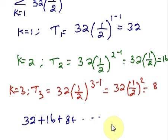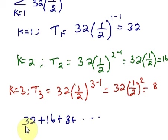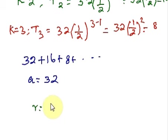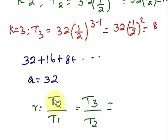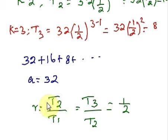In step 2, we are going to determine the values for A and R. A is the first term, so A equals 32. R is the ratio: T2 over T1 equals 16 over 32 which is 1/2. Similarly, T3 over T2 equals 8 over 16 which is also 1/2. So R equals 1/2. We have now found the values for A and R.